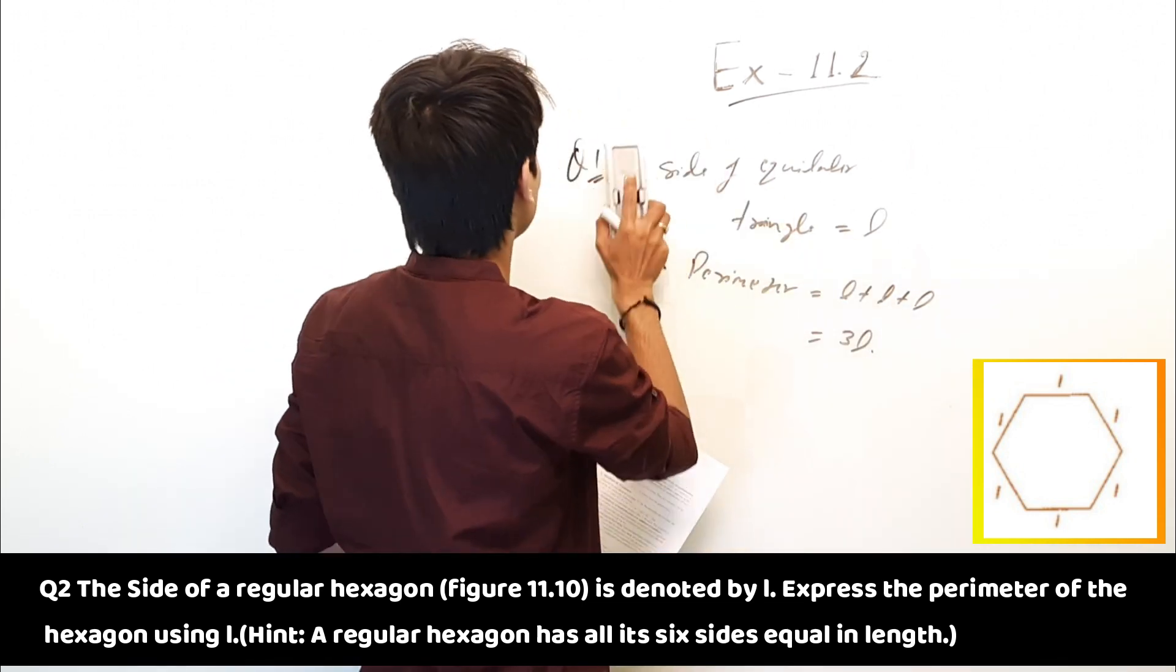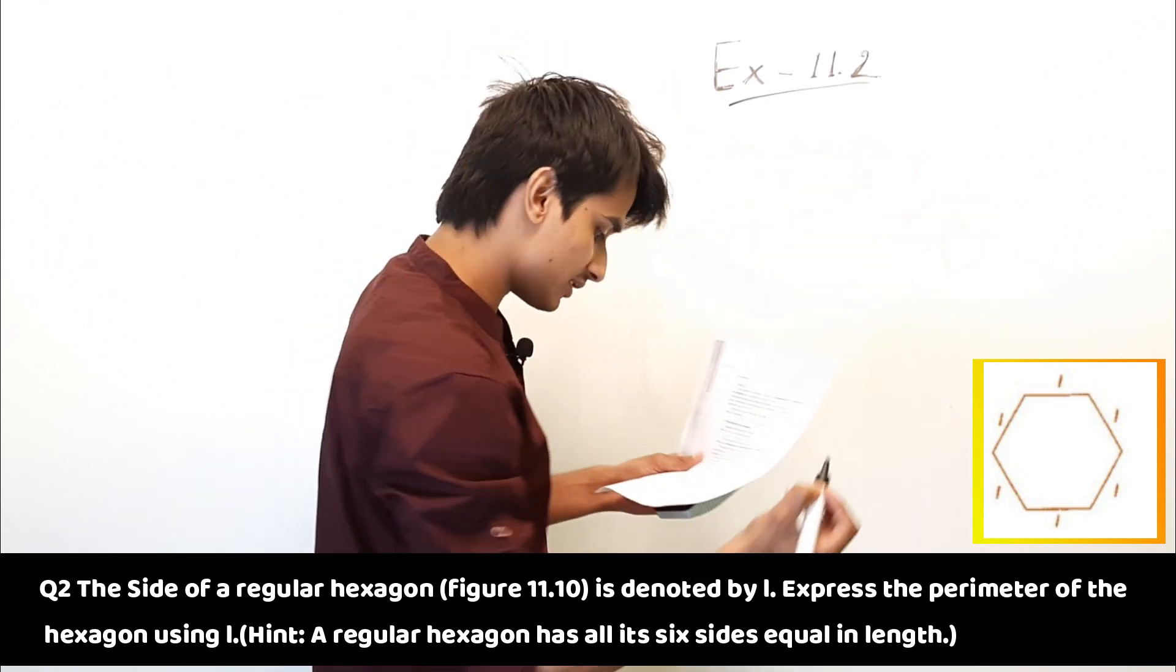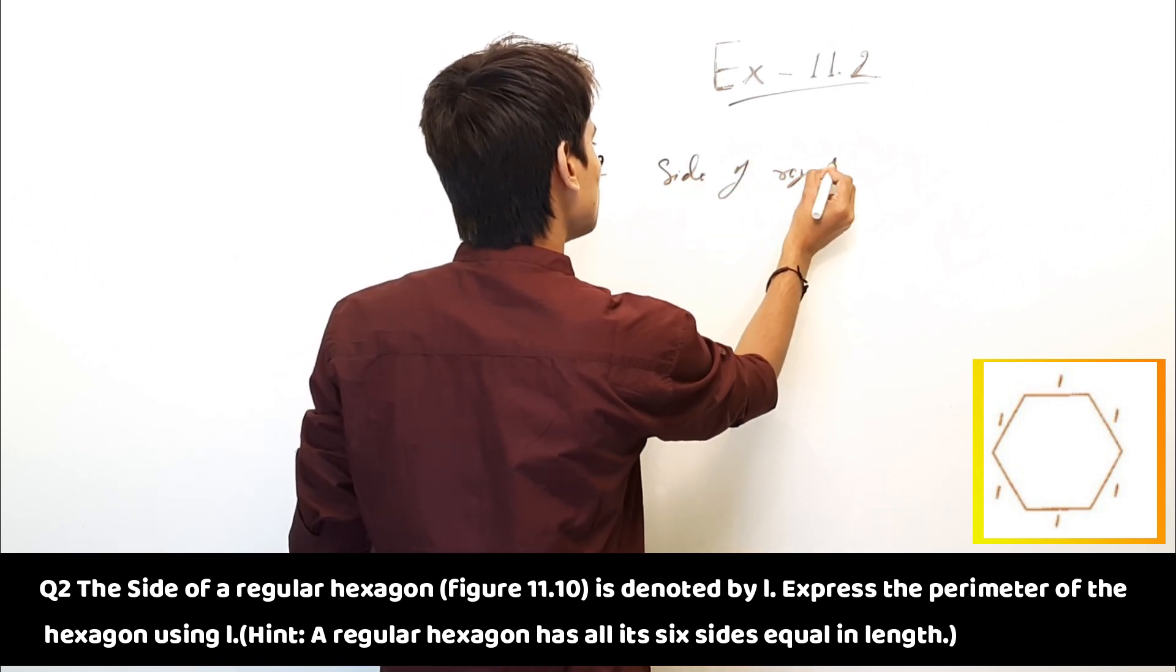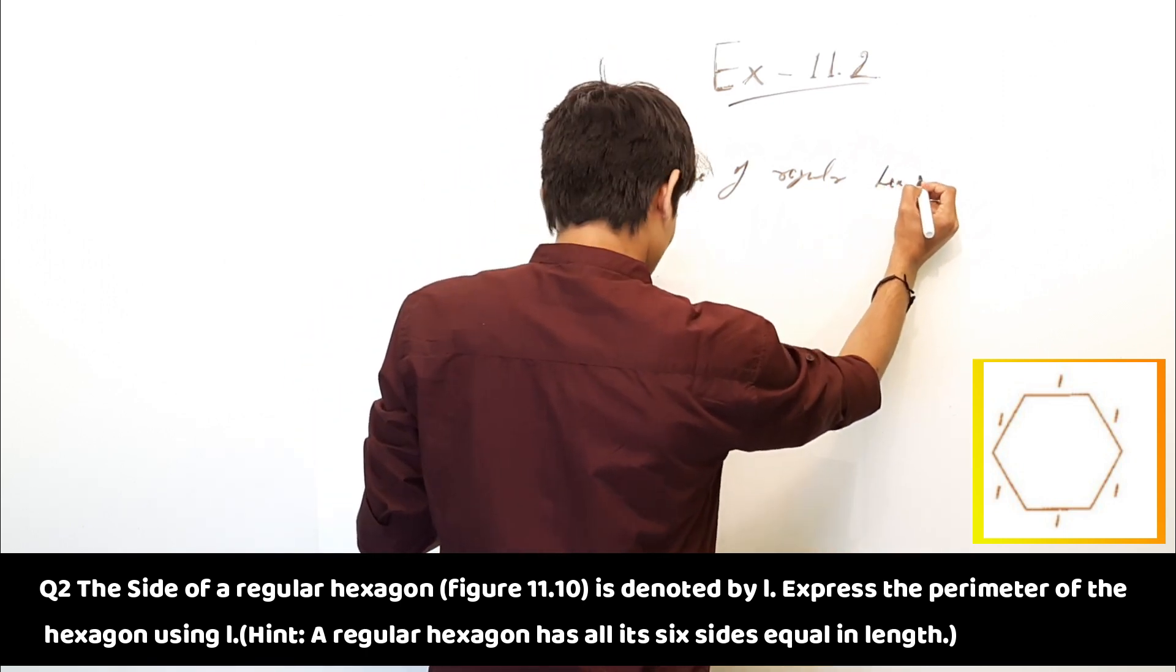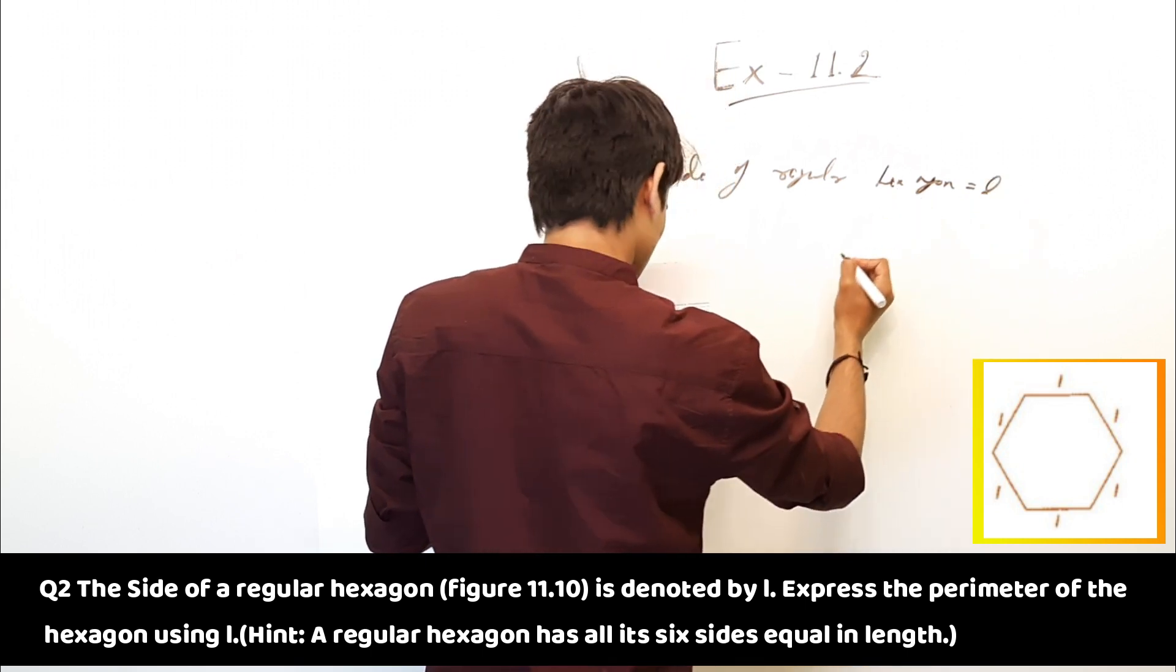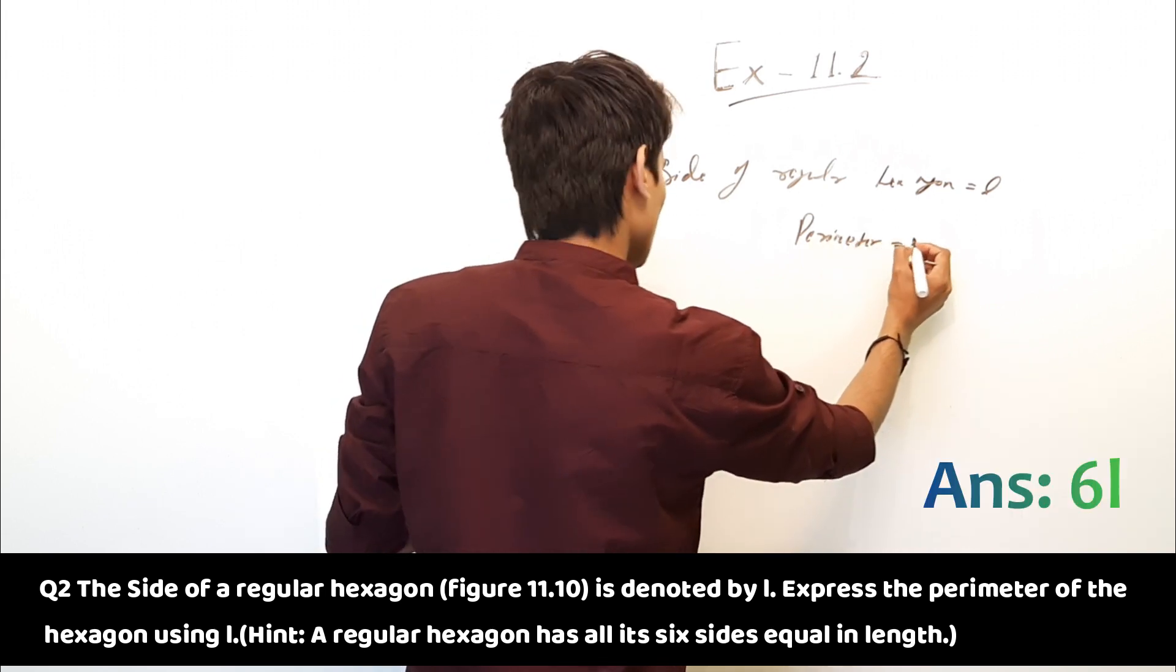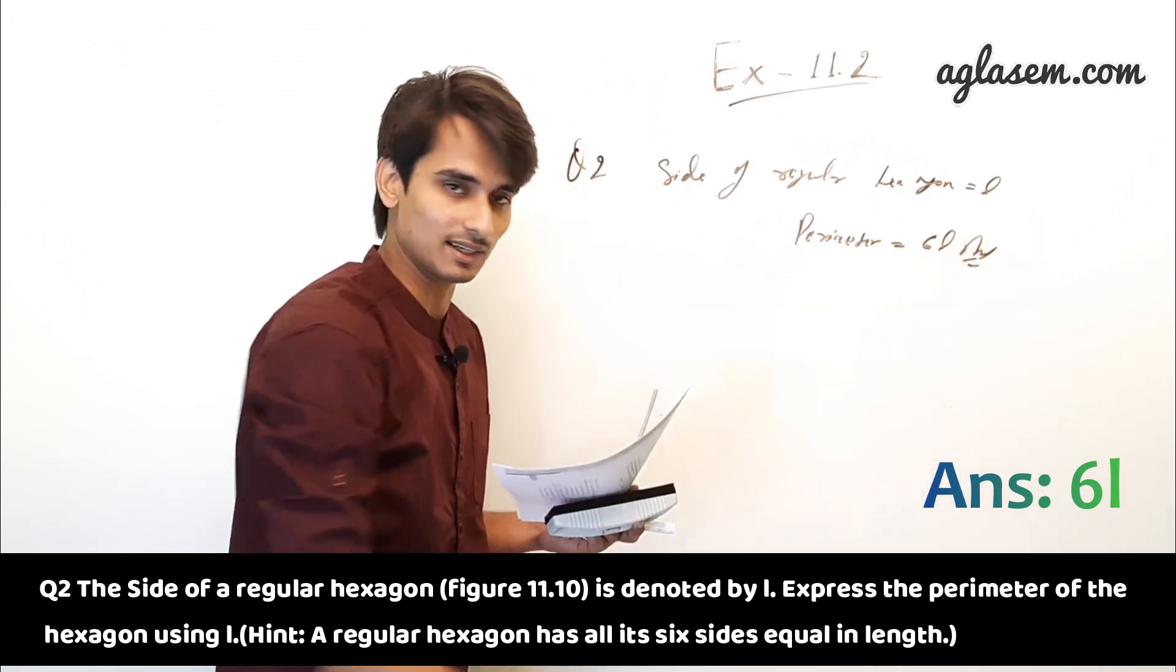So let's start. Side of regular hexagon is equal to L. Perimeter is equal to 6L. So this is the answer, 6L.